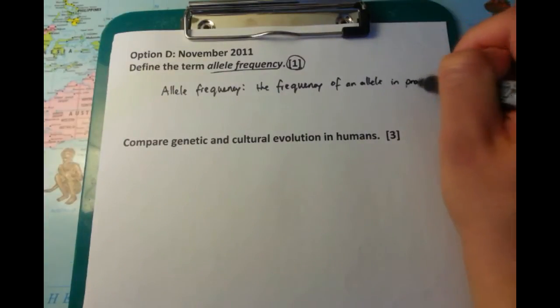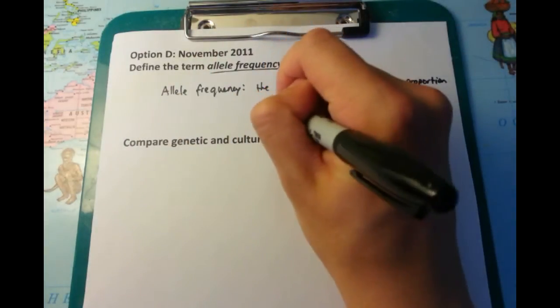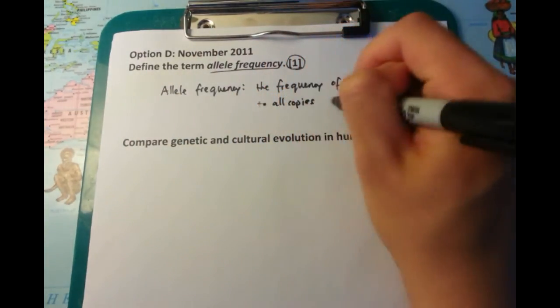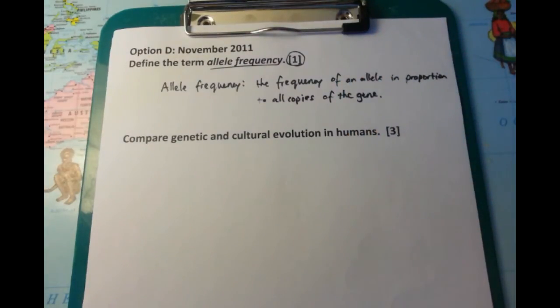You'd put on the numerator the number of copies of that particular allele, and on the denominator you'd put the total number of different allele copies. That's the easy question.